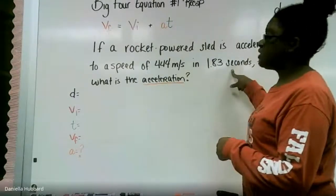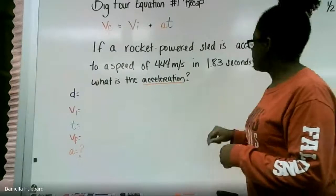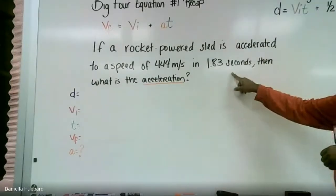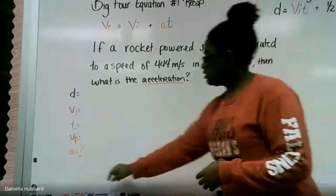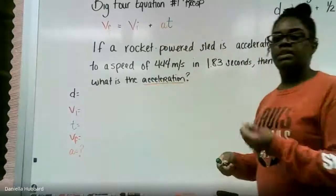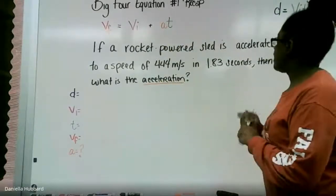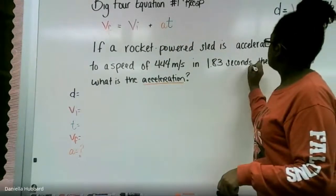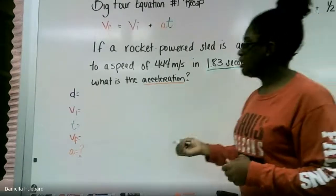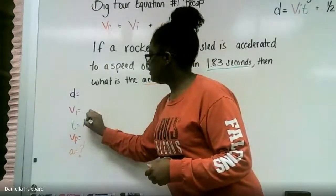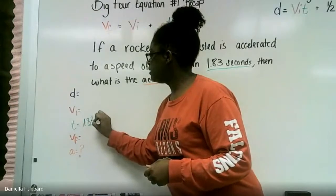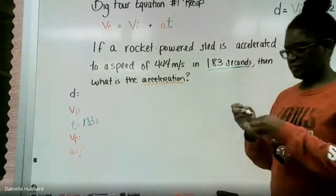Next piece of information they give us as we work backwards is the 1.83 seconds. The unit is seconds and we know seconds is a measurement of time, so for t I'm going to put 1.83 seconds.